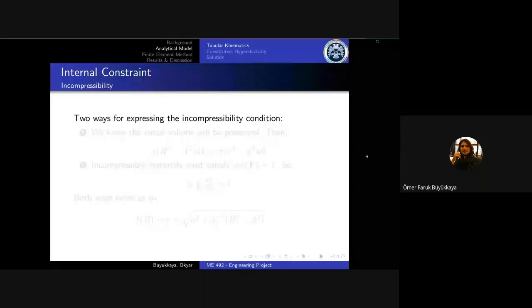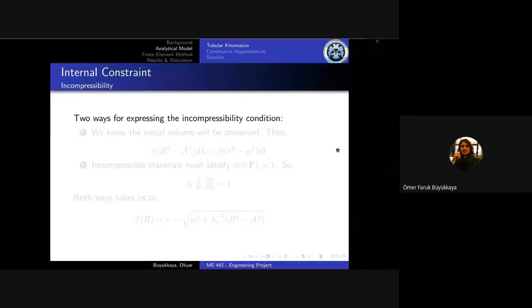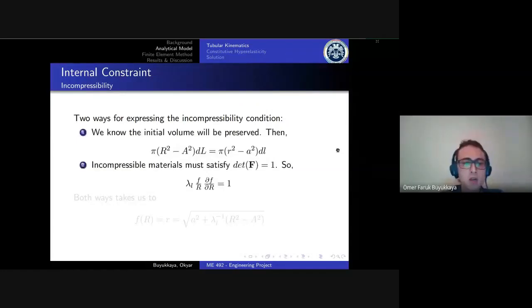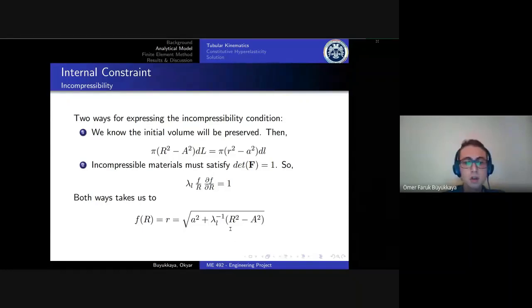We must implement the incompressibility condition here because the rubber-like materials, most of the hyperelastic materials, are incompressible—especially the human tissues are incompressible. We have two ways to implement this condition, and both ways take us to the solution that the current radius is a non-linear function of the reference coordinate. Here we don't know lambda_l and current inner radius. We will solve them later.